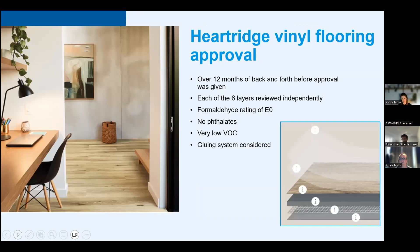The last example is Hartridge vinyl flooring, which took over 12 months and about seven rounds of back and forth with manufacturer Dunlop Flooring to get approved. It's a six-layer product with an E0 formaldehyde rating, no phthalates, and very low VOCs. The panel pulled the six layers apart individually — down to the glue used to press the layers together and the gluing system used on the ground — before agreeing to approve it. That's the level of detail we go into.